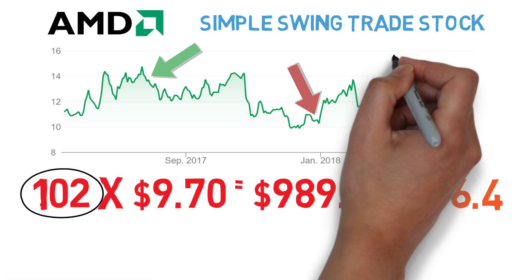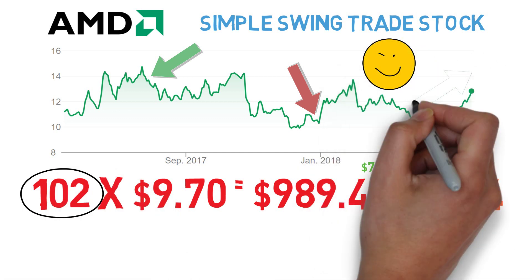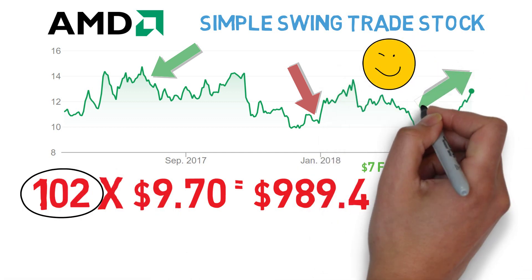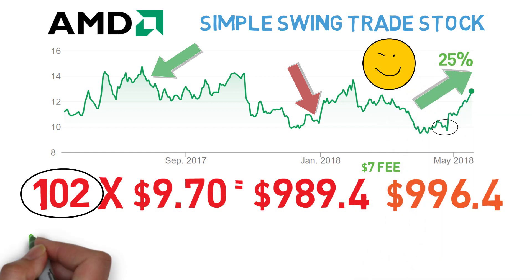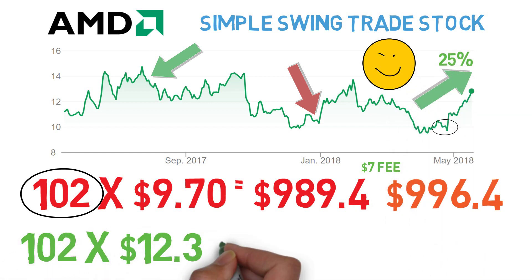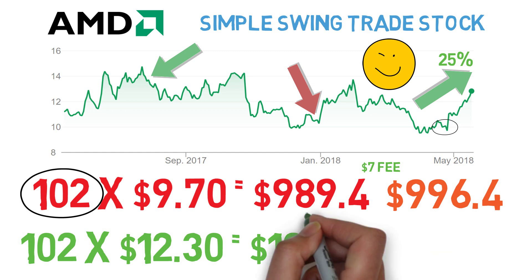At this point, you own 102 shares. The stock can go up or down, it's pretty random in the short term. AMD did go up over 25% in the past two weeks. The price right now is $12.30. So your $1,000 just turned into $1,254, a 25% increase as well.